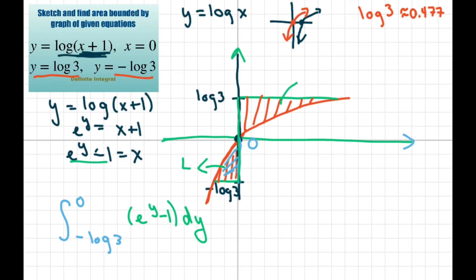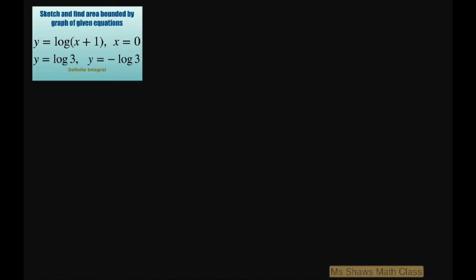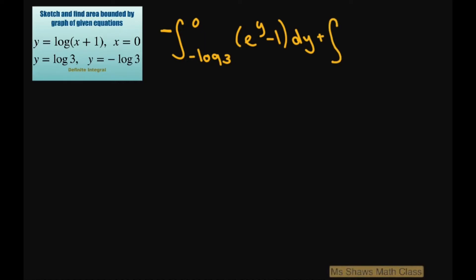For the area on the right of y, that's going to be plus — so this should have been minus. From this area, we're going from 0 to log of 3, and this is going to be positive e to the power of y minus 1 dy, because this is with respect to y. So we have the negative integral from negative log of 3 to 0 of e to the power of y minus 1 dy, plus the integral from 0 to log of 3 of e to the power of y minus 1 dy.